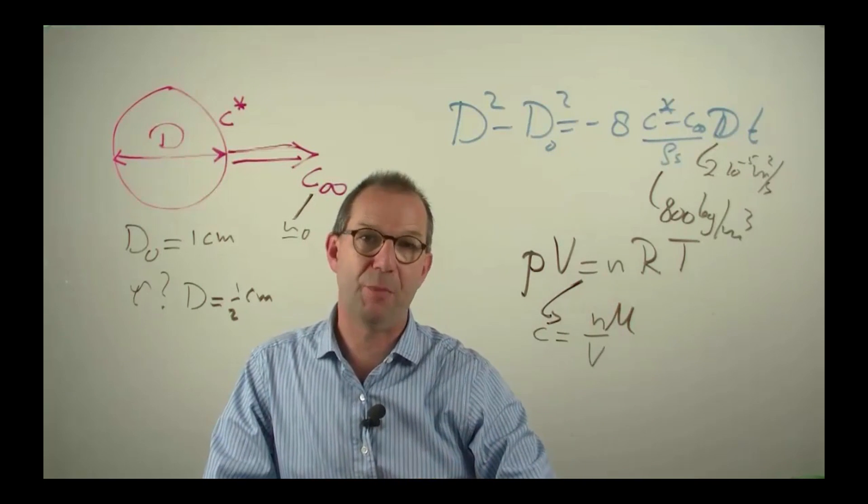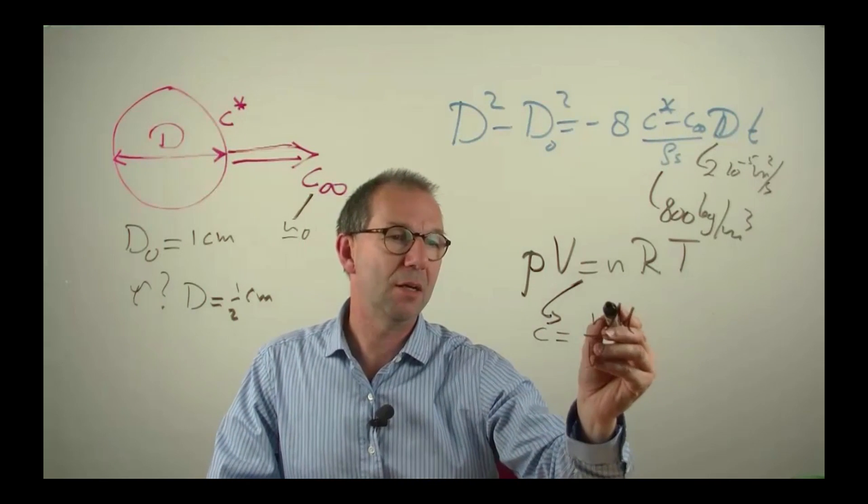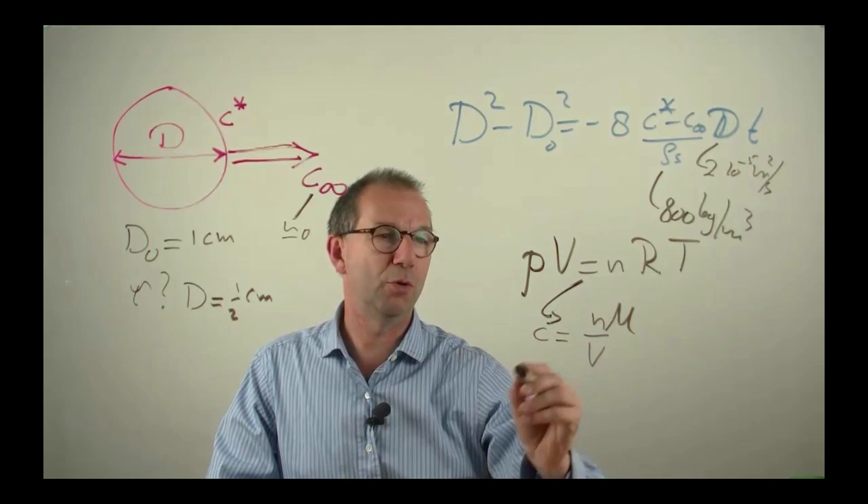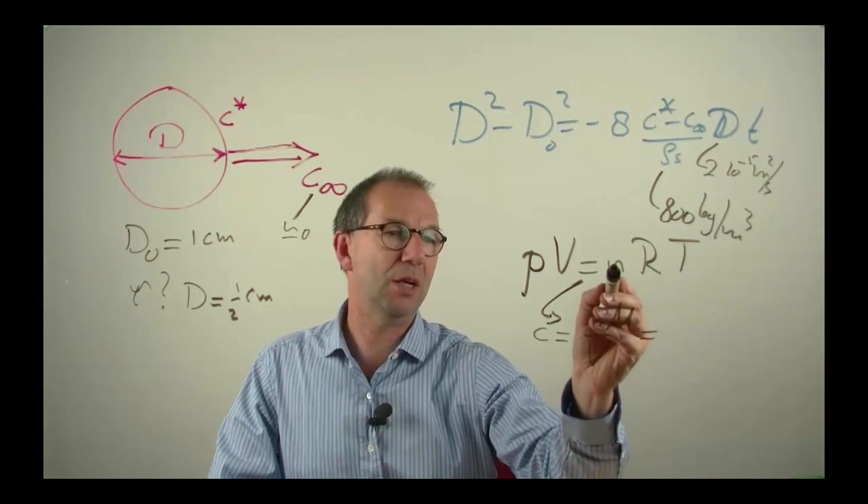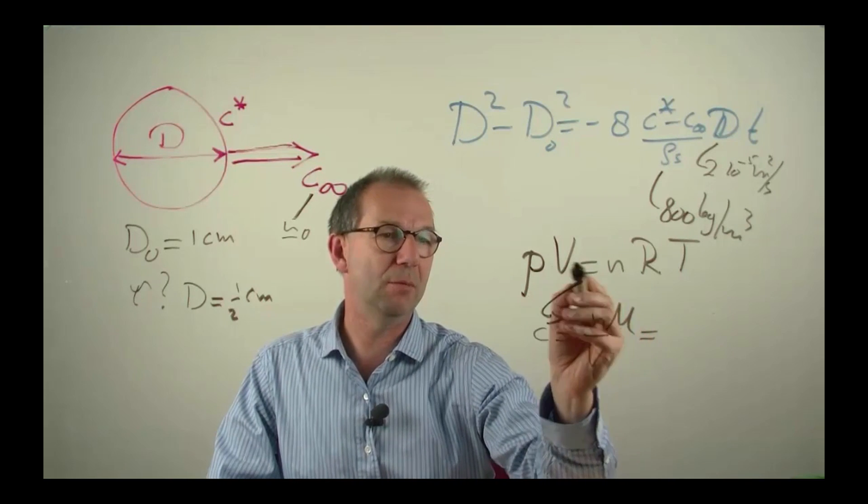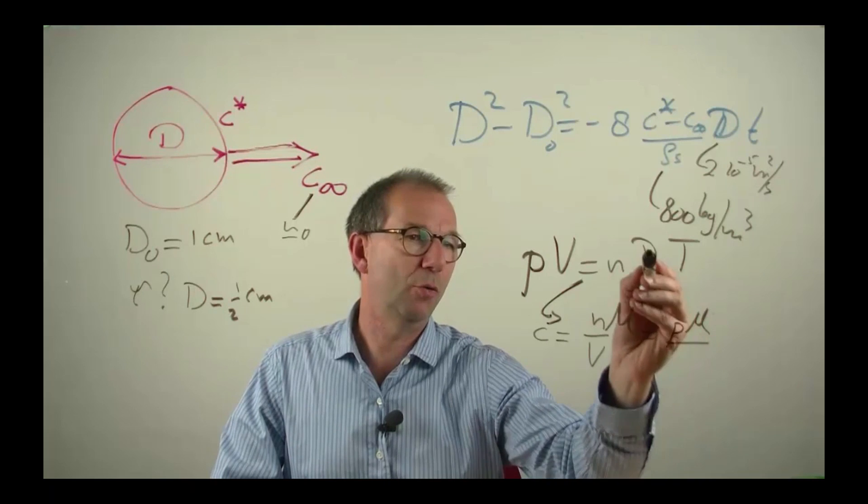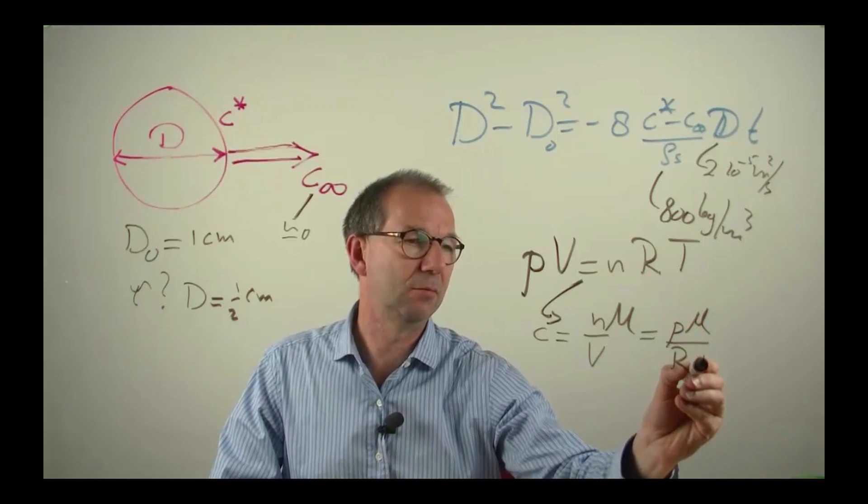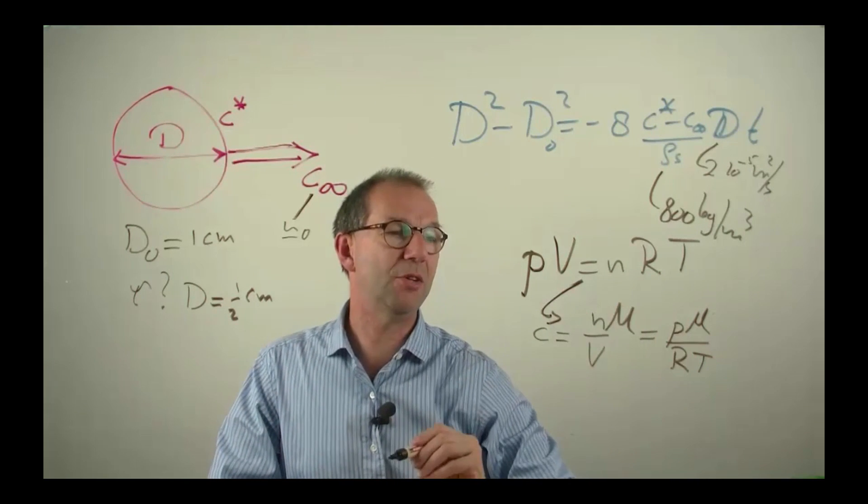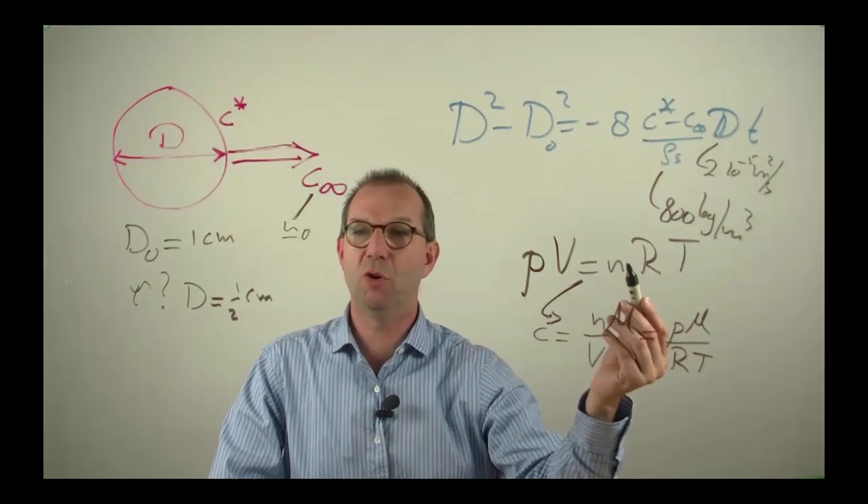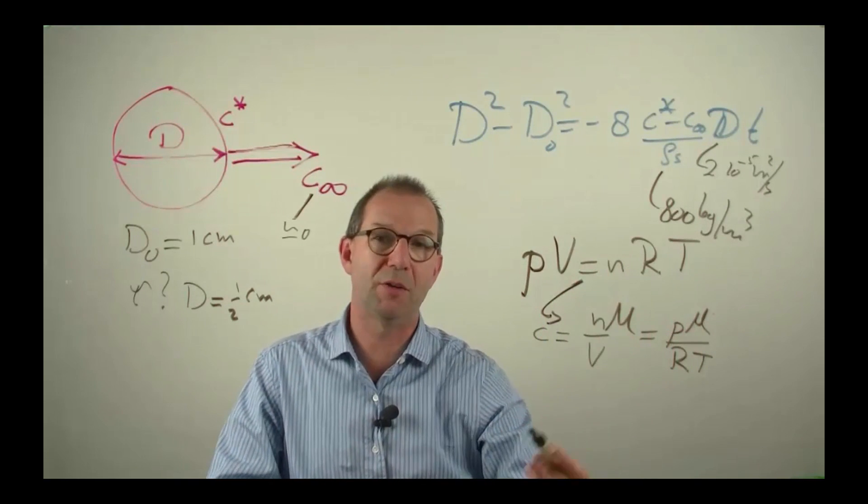This molar weight is again something that I can look up. Now, if you look at what N times molar weight over volume is, then the ideal gas law tells you that that is P times the molar weight over RT. P is the vapor pressure, I look that up. M is the molar mass, on the order for these substances of 100 g per mol.